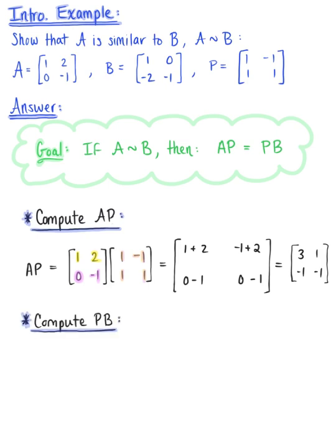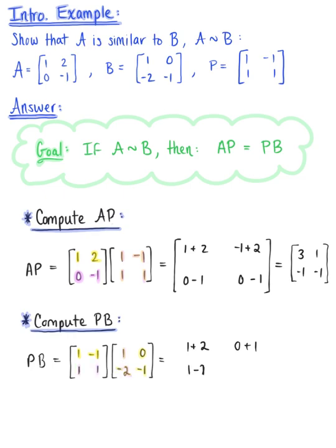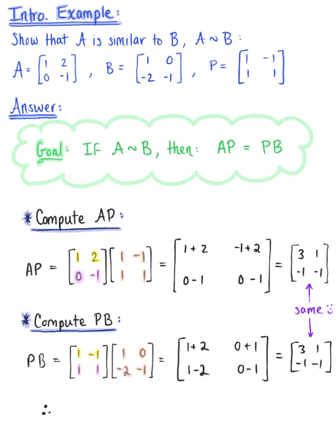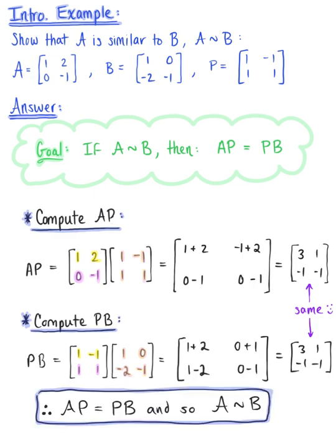Now we compute P times B using the row-column rule. Row 1 times column 1 gives 1 plus 2; row 1 times column 2 gives 0 plus 1; row 2 times column 1 gives 1 minus 2; and row 2 times column 2 gives 0 minus 1. This gives the resulting 2 by 2 matrix: 3, 1, negative 1, negative 1 — which matches the product A times P. Therefore, we have verified that A times P equals P times B, and confirmed that matrix A is similar to matrix B.